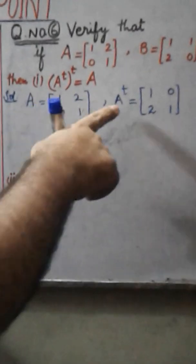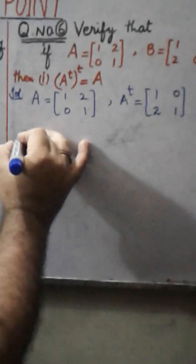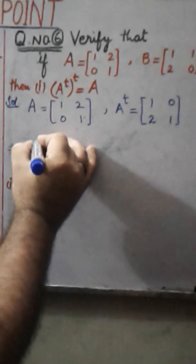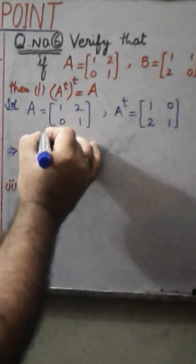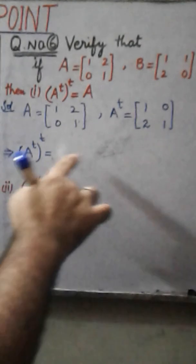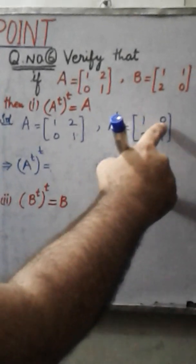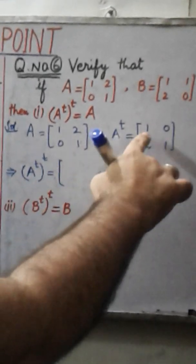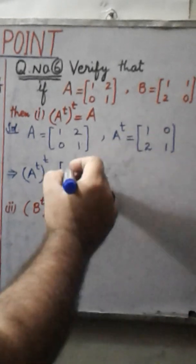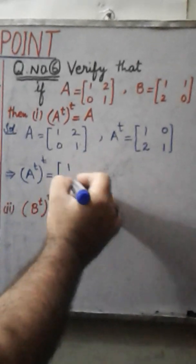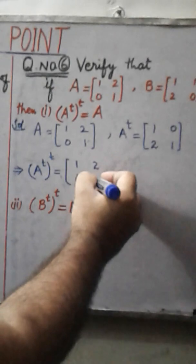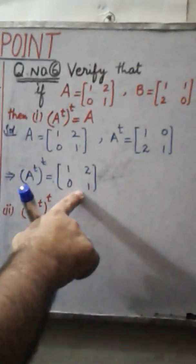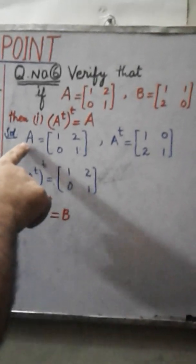Now we again take the transpose of A transpose. This implies that A transpose transpose is equal to: looking at the elements of A transpose which are 1, 0, 2, 1 — again we interchange rows into columns. So 1, 0 and 2, 1 become columns, giving us 1, 2, 0, 1, which is equal to matrix A.